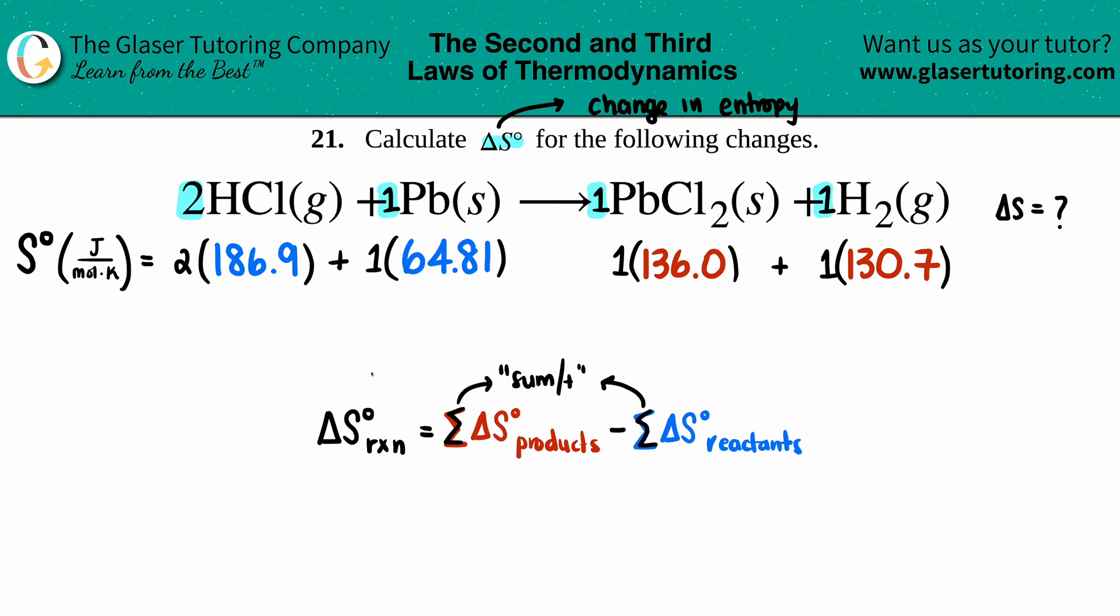Let's add this up. For reactants: 186.9 times 2, then add 64.81, and I get 438.61. For products: 136 plus 130.7 gives me 266.7. Here are your totals.